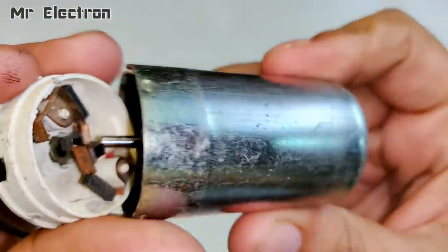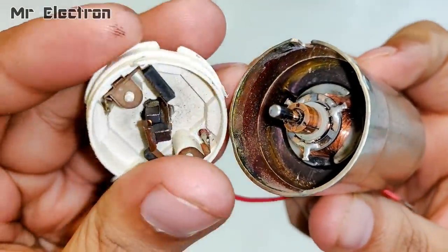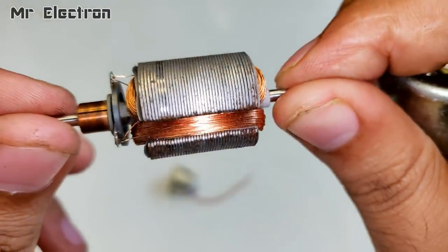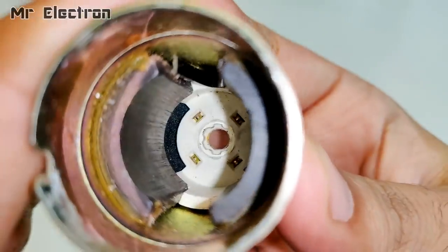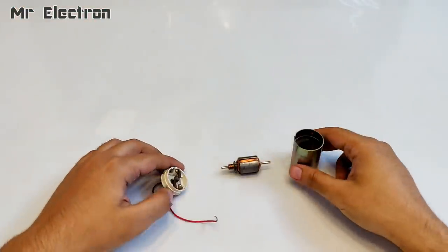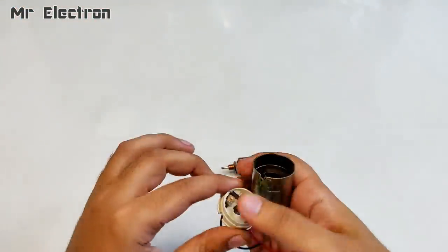Hi guys, welcome back to my channel Mr. Electron. In this video I'm going to teach you how to convert a DC motor, a toy DC motor, into a 220 volts to 12 volts transformer. For this we don't need these two, only we need an armature.